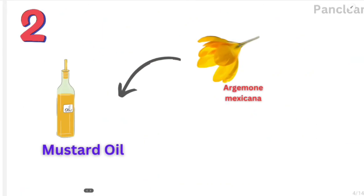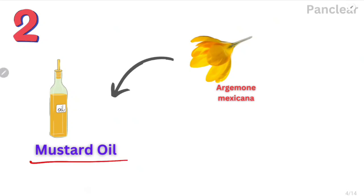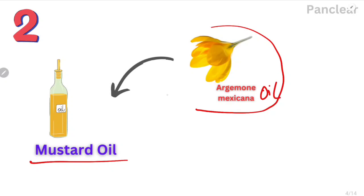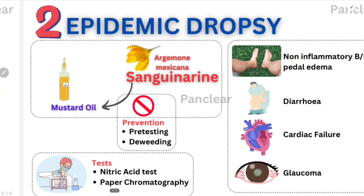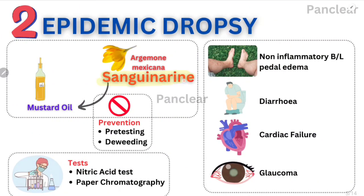The second disease is epidemic dropsy. Mustard oil is normally consumed, but in the mustard oil, the adulterant is Argemone mexicana flower oil. If Argemone mexicana oil is mixed into mustard oil, it will be toxic. This Argemone mexicana oil contains something called sanguinarine, and sanguinarine causes all the toxic effects.